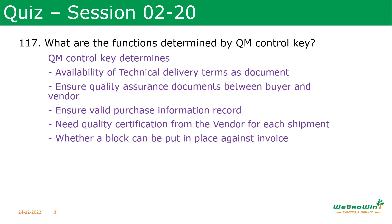What are the functions determined by the QM control key? The QM control key determines availability of technical delivery terms as per document, ensures quality assurance documents between the buyer and vendor, checks whether valid purchase information records exist, checks whether a quality certification from the vendor is needed for each shipment, and also checks whether a block can be put in place against the invoice. When the quality module is implemented, these parameters can be analyzed and put into action to bring maximum benefit from the QM module.